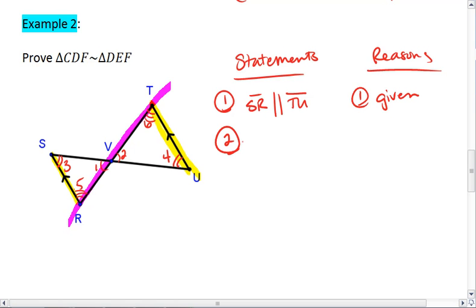We then know that angle three is congruent to angle four. This is by the alternate interior angle theorem, which also tells us that angle five is congruent to angle six.